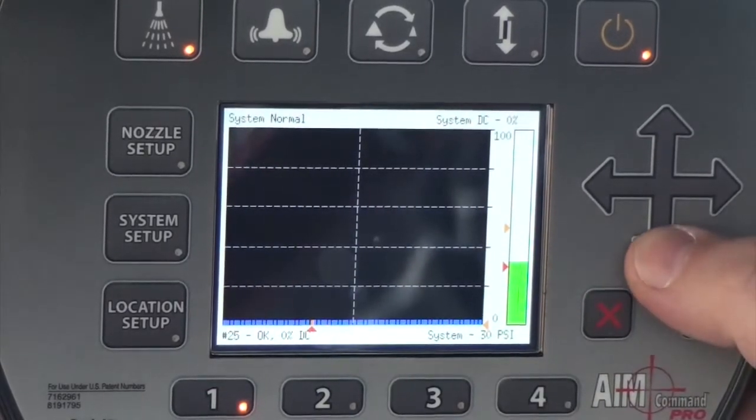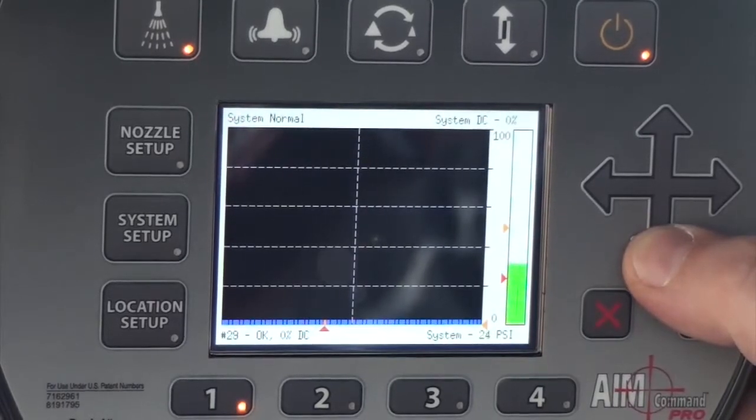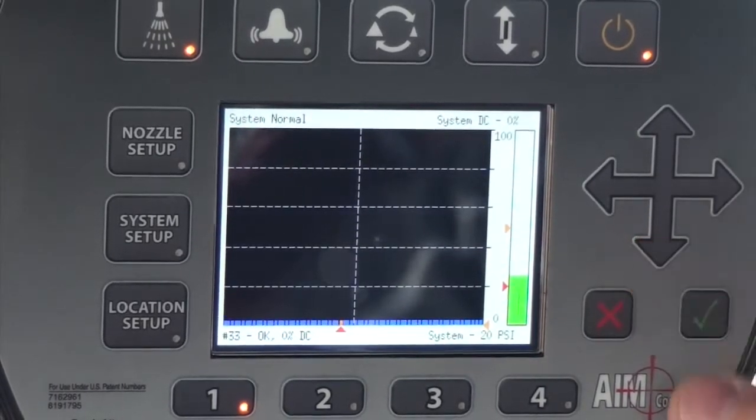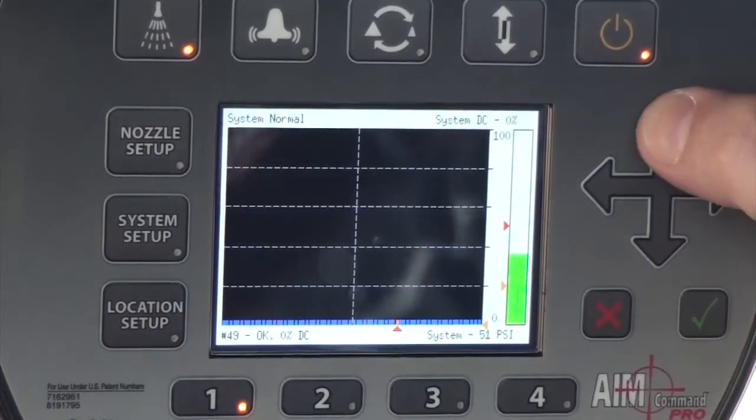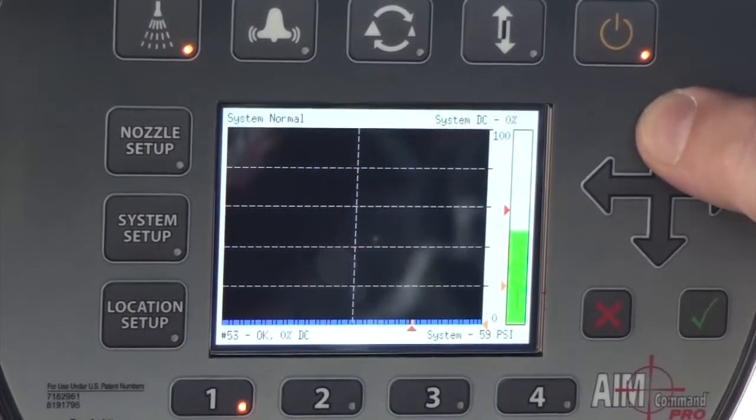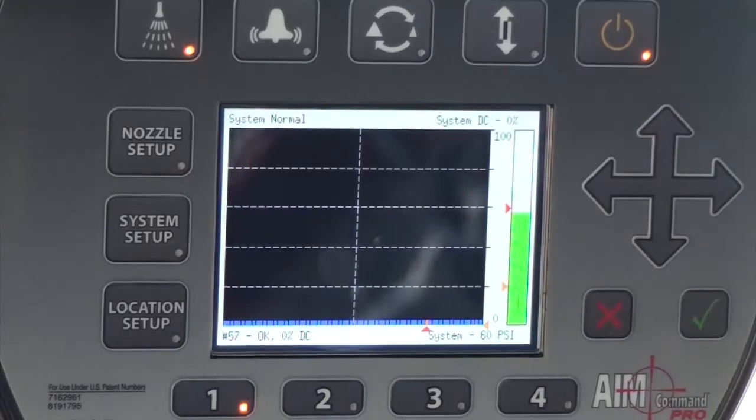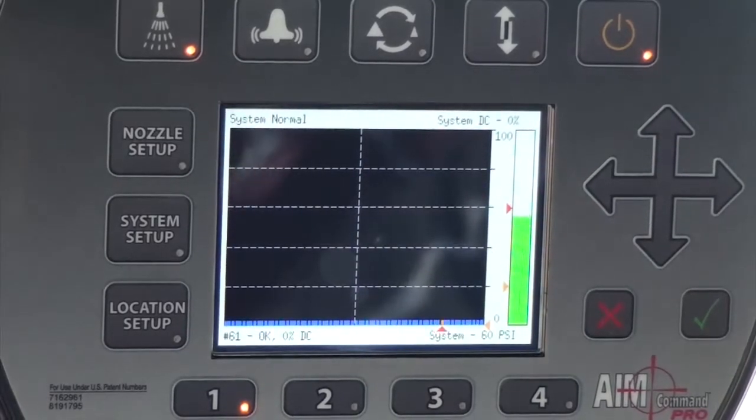By spraying the headlands of a field at a lower pressure, you will get larger droplets that are less prone to drift. Once you get into a field where you would like better canopy penetration, turn the pressure up at the push of one button. It's simple, quick, and makes operators more efficient.